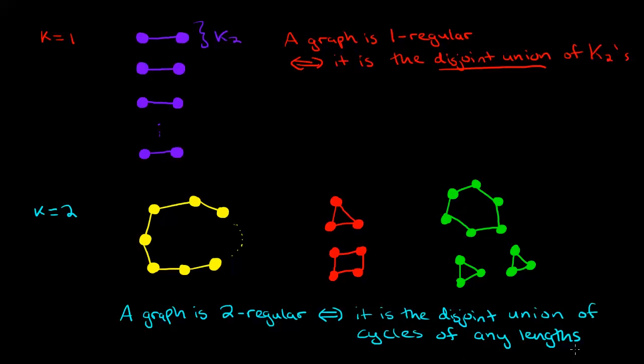A graph is two regular if and only if it is the disjoint union of cycles of any lengths. This is any number of cycles, each one of them can have any length. So now we've characterized all the zero regular graphs, the one regular graphs, and the two regular graphs.